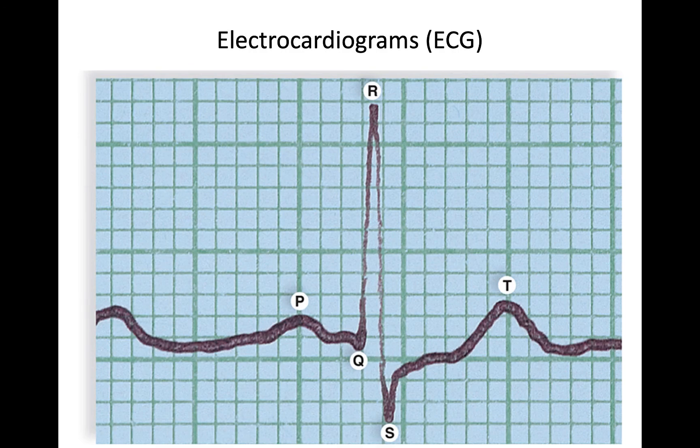These electrical impulses from the heart can be detected using a device creating a visual representation of a heartbeat, called an electrocardiogram, or EKG. All healthy hearts have a typical EKG shape, which includes structures labeled P, Q, R, S, and T.